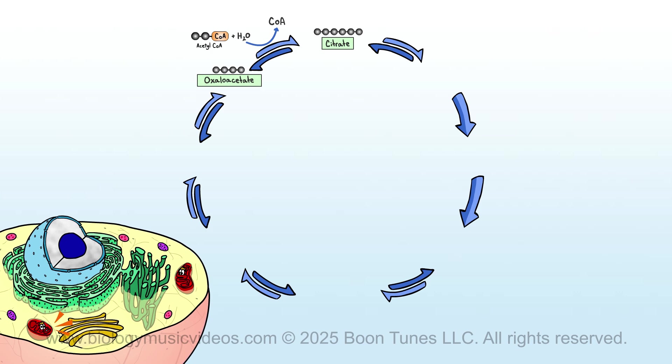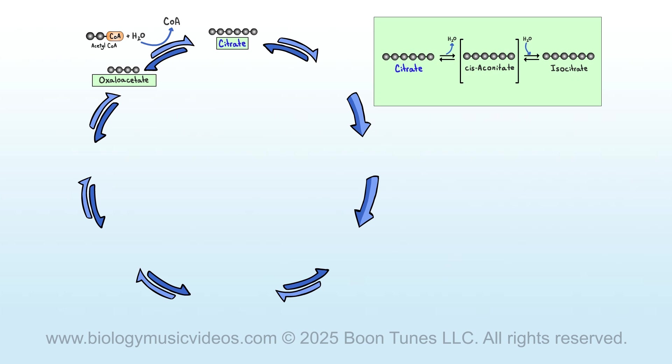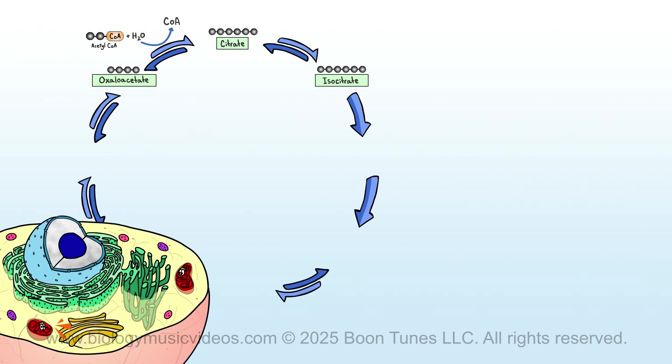Now, without further ado, we'll tell you what happens in step two. The citrate that step one provides gets rearranged, or isomerized. Isocitrate is thereby obtained, which has six carbons in its chain. Follow along and you will see the work that we do in step three.